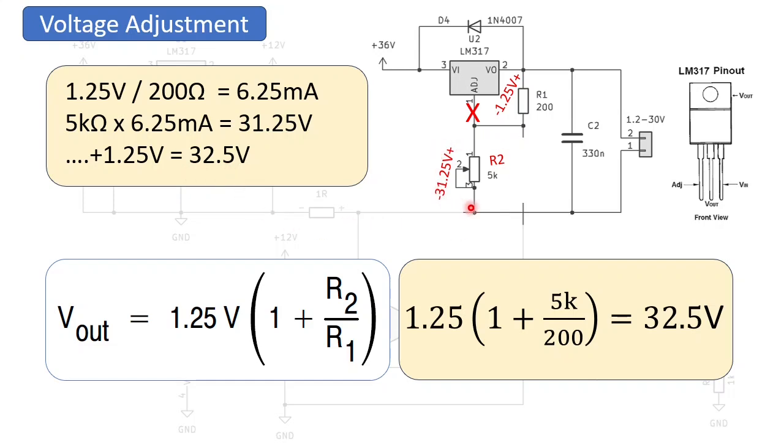Now, if you make R2 zero, you will see that you still have 1.25 volts on the output. This is one shortcoming of this IC. You cannot go lower than 1.25 volts.